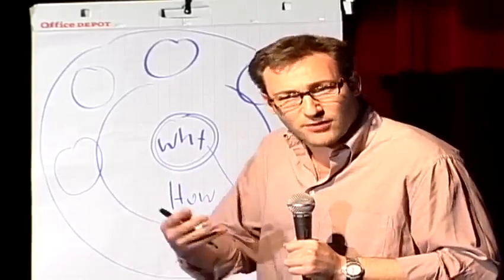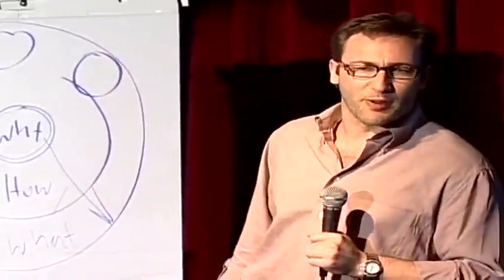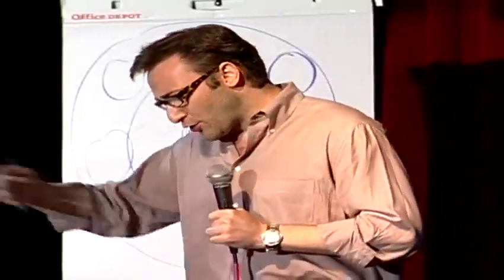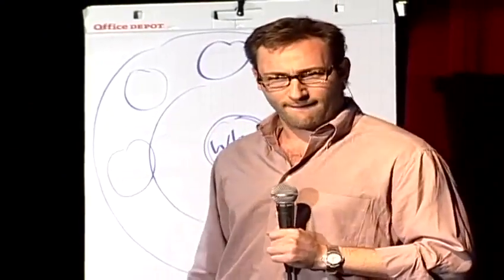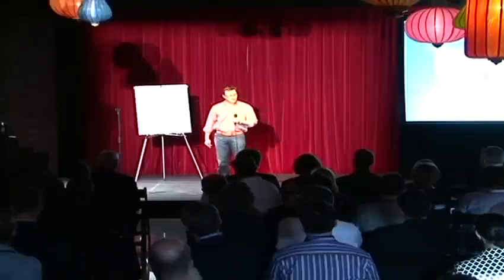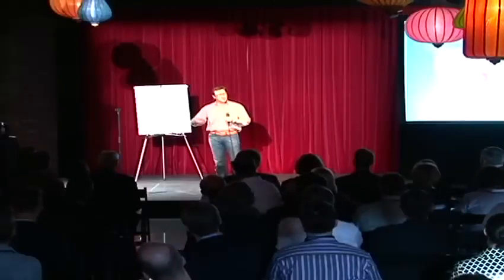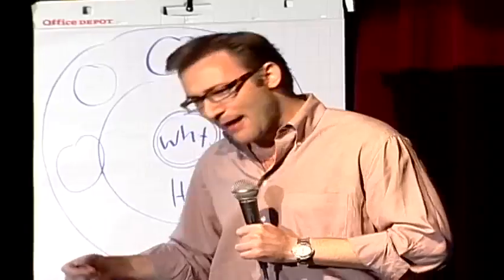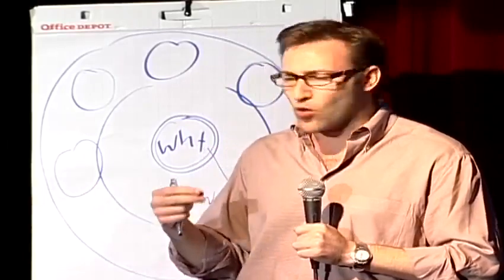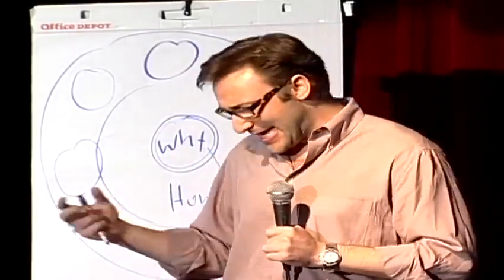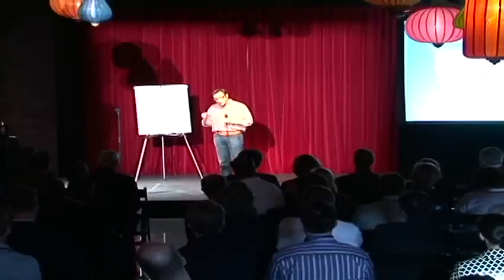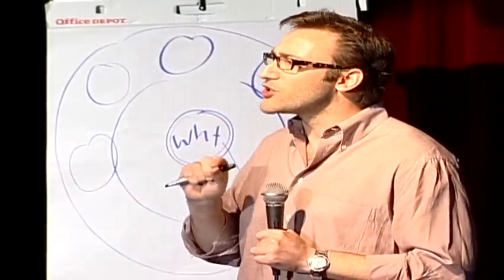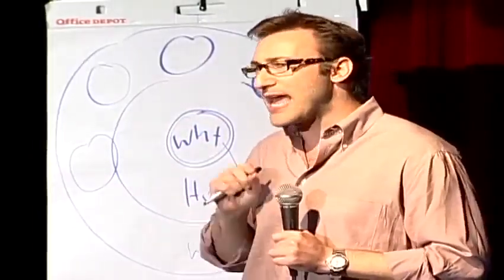And nowhere else is there a better example of this than with the Wright brothers. Most people don't know about Samuel Pierpont Langley. And back in the early 20th century, the pursuit of powered man flight was like the dot com of the day. Everybody was trying it. And Samuel Pierpont Langley had what we assume to be the recipe for success. I mean, even now when you ask people why did your product or why did your company fail, people always give you the same permutation of the same three things: undercapitalized, the wrong people, bad market conditions. It's always the same three things. So let's explore that. Samuel Pierpont Langley was given $50,000 by the War Department to figure out this flying machine. Money was no problem. He held a seat at Harvard and worked at the Smithsonian and was extremely well connected. He knew all the big minds of the day. He hired the best minds money could find and the market conditions were fantastic. The New York Times followed him around everywhere and everyone was rooting for Langley.